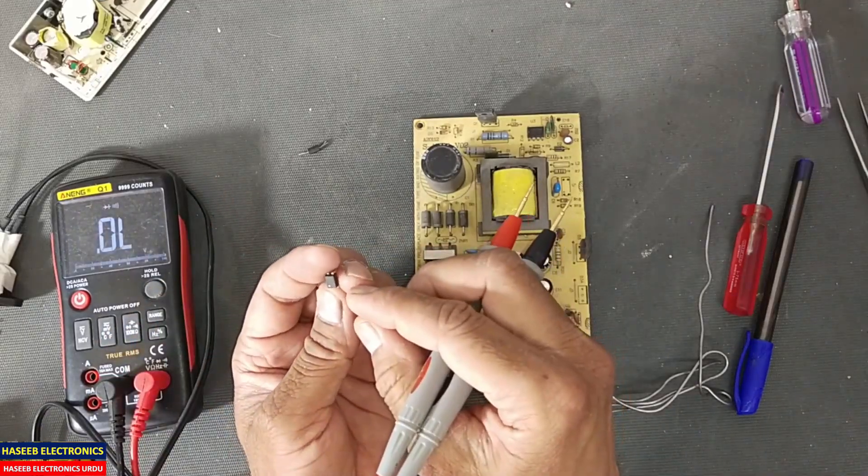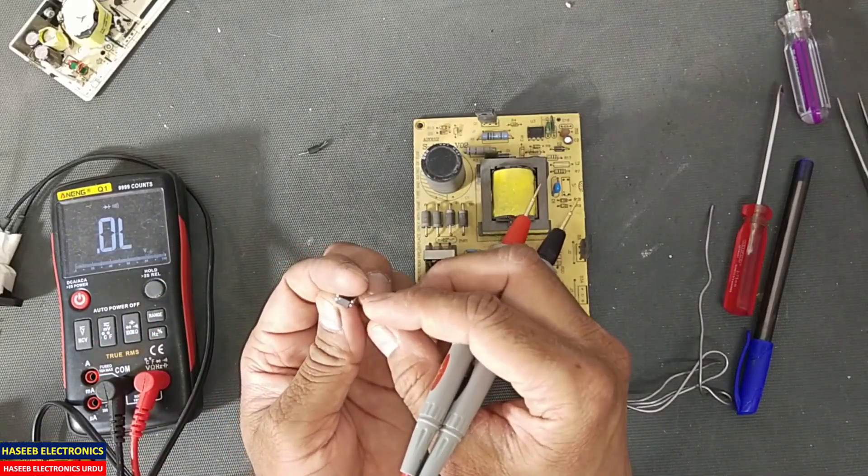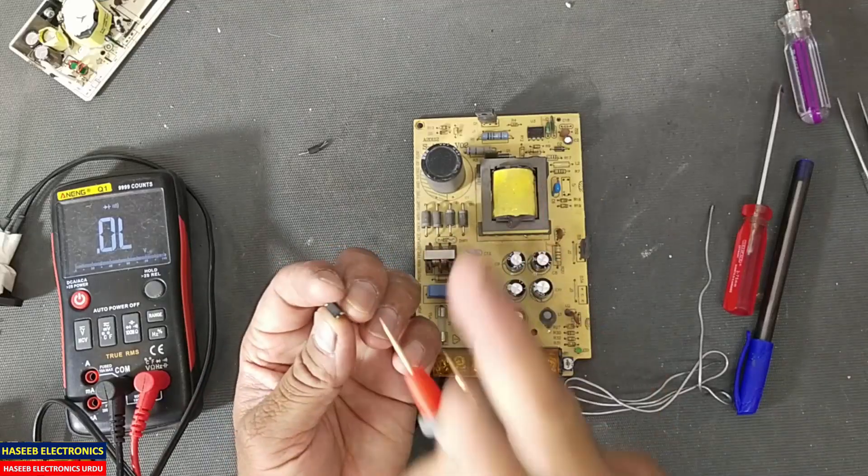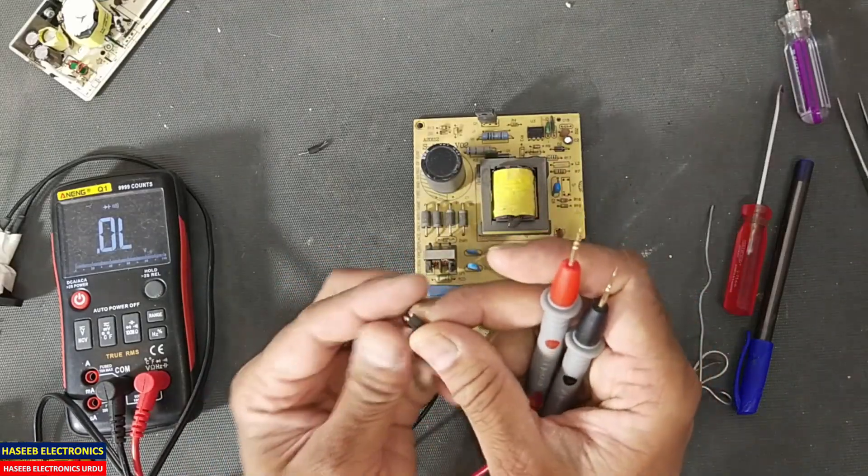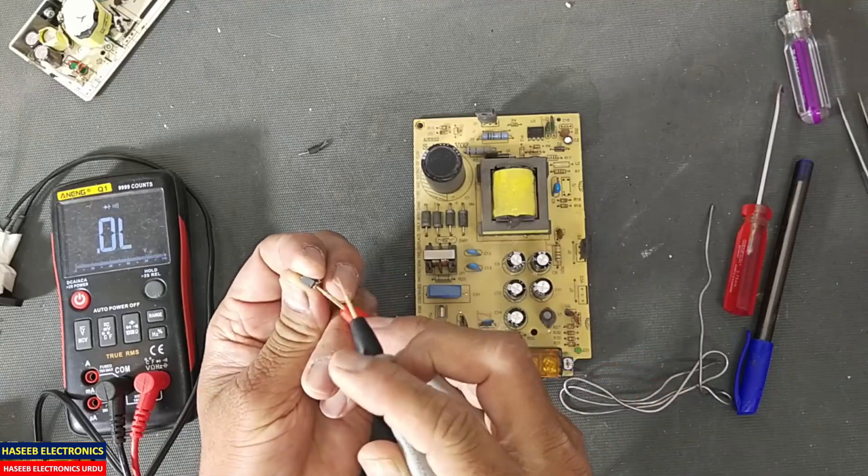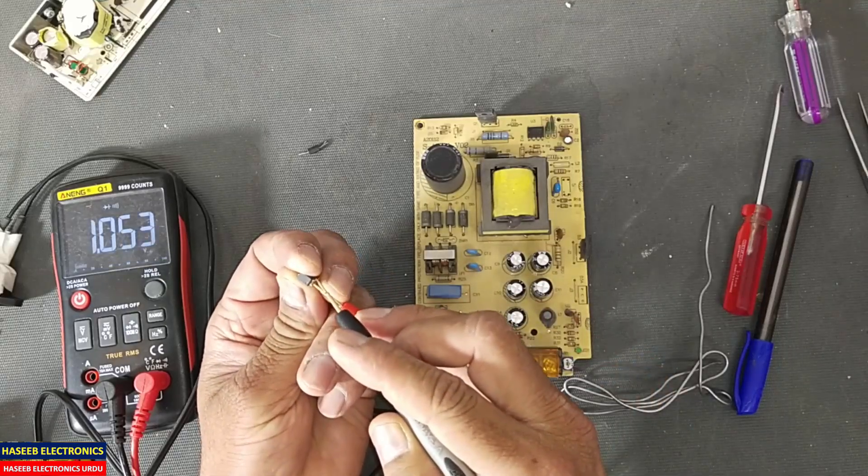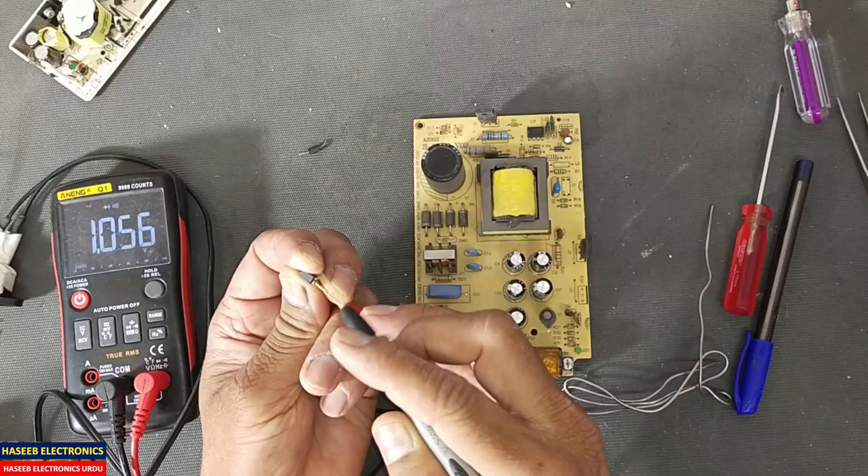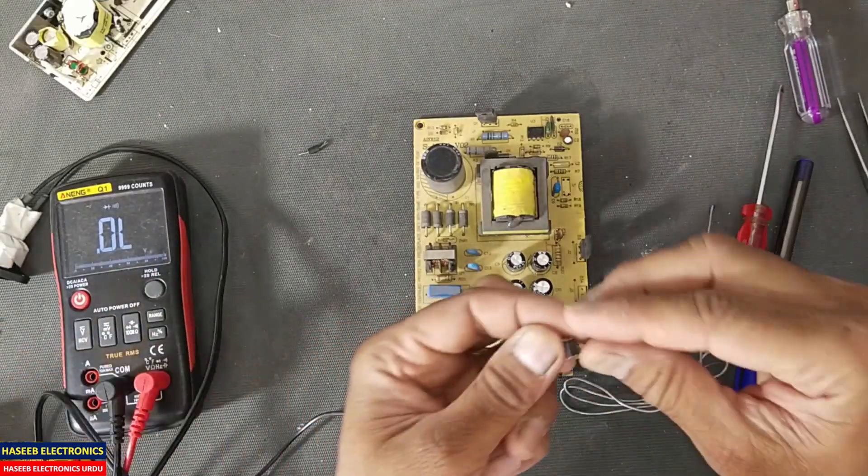Diode mode, pin 1 and 2 - yes, it is one volt drop. So this optocoupler is good.